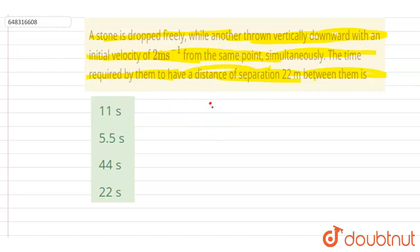say this is the stone - one of them is dropped and one of them is given an initial velocity of 2 meters per second in the vertically downward direction.